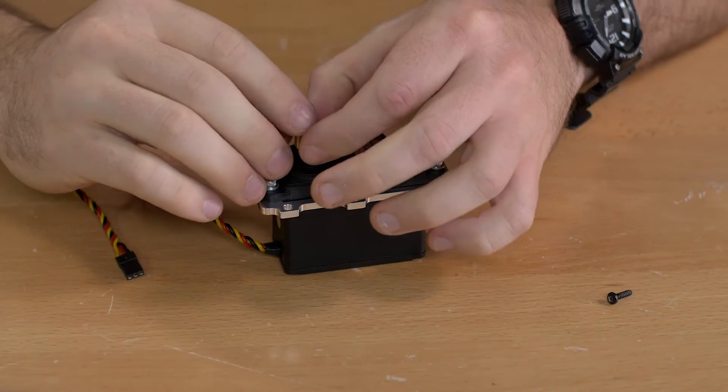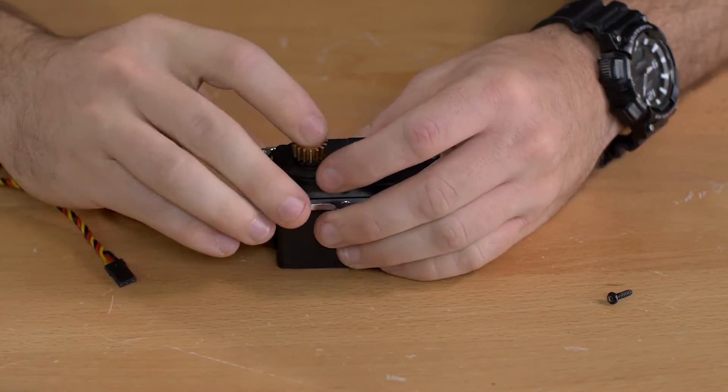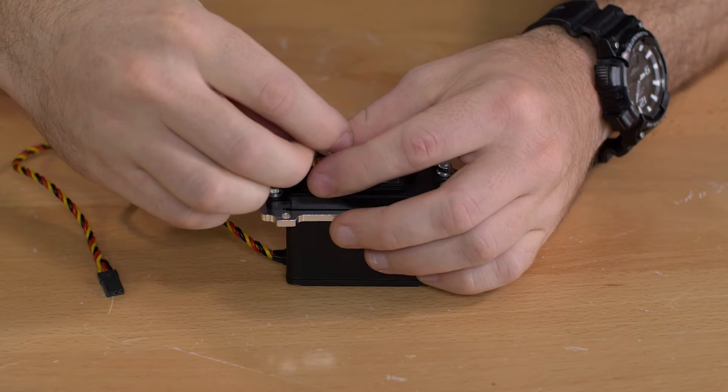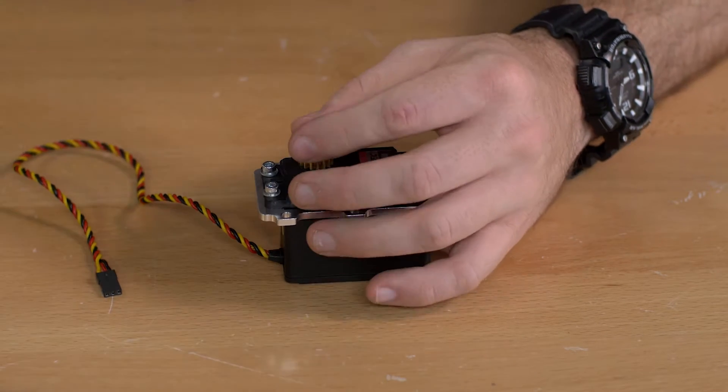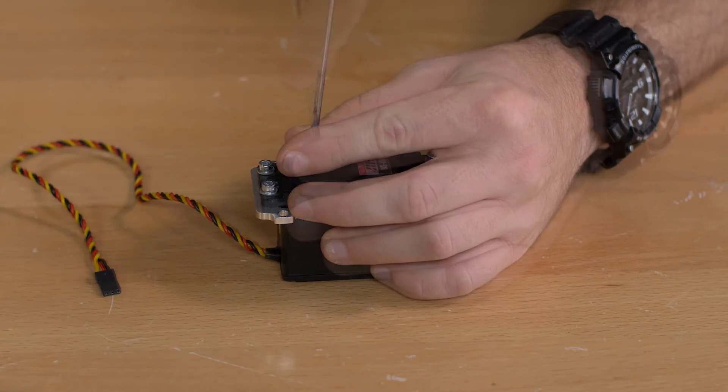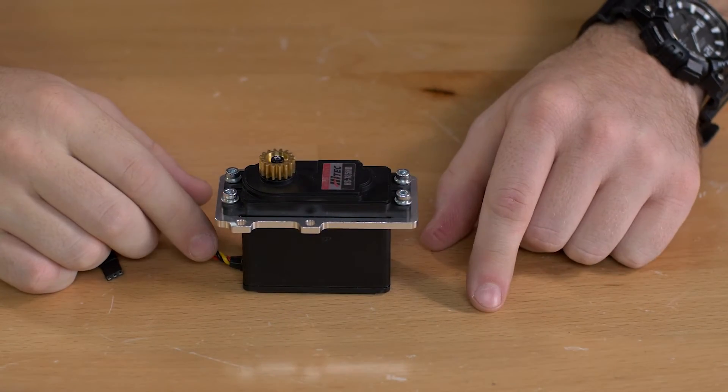Once we've finished that we need to add the gear to the top of the servo. We'll just use the Phillips head screwdriver to finish that off. Once that's done we're going to put that off to the side and move on to the next step.